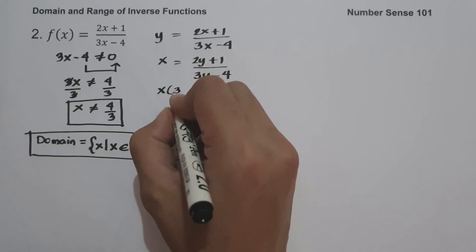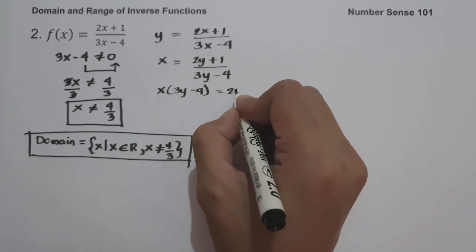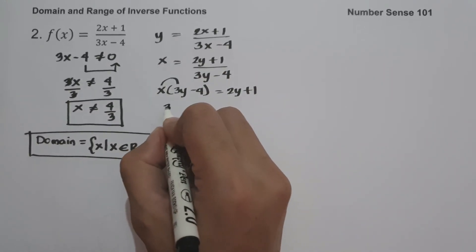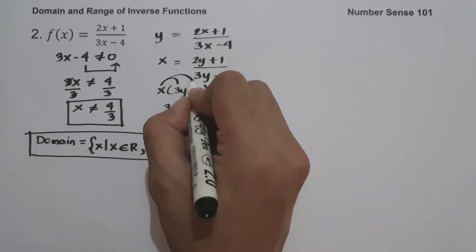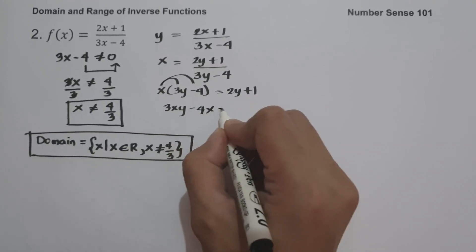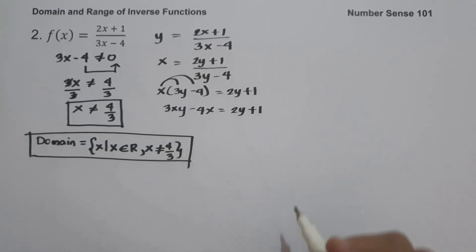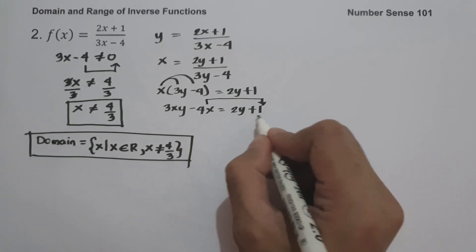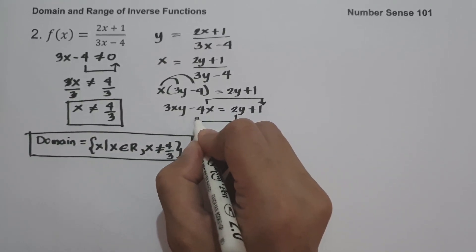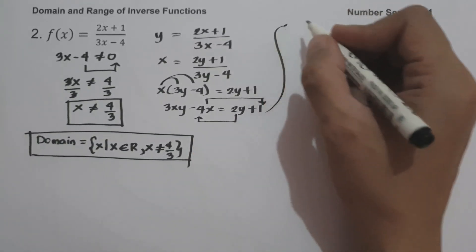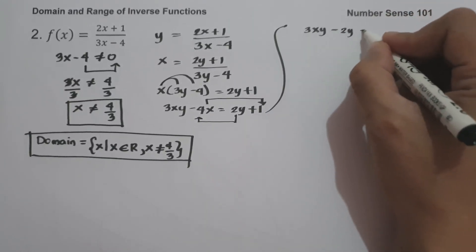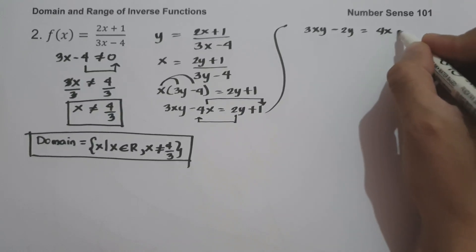Multiplying x by 3y minus 4 gives us x times 3y minus 4 equals 2y plus 1, which expands to 3xy minus 4x equals 2y plus 1. Solving for y, we move terms: 3xy minus 2y equals 4x plus 1.